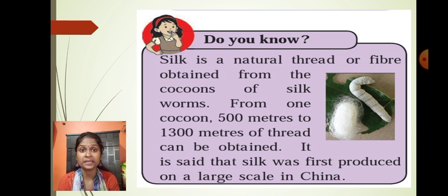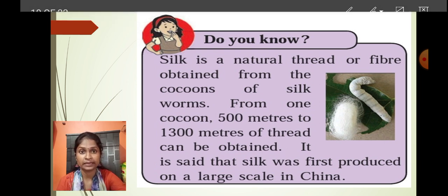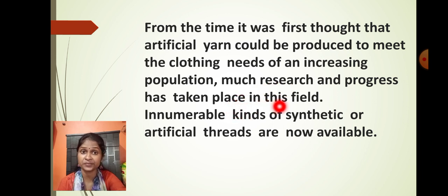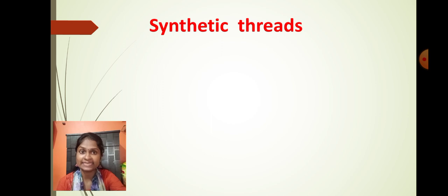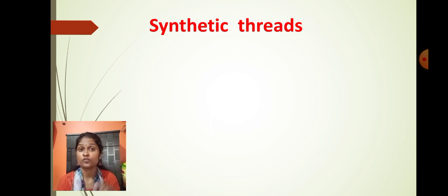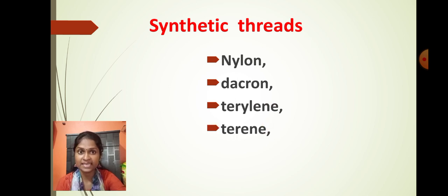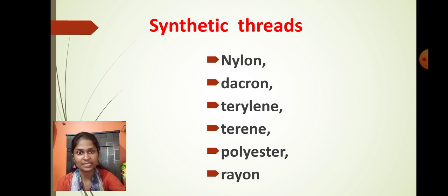As population is increasing, we want more and more cloth. So it was thought that artificial yarn would be produced to meet the clothing needs of an increasing population, and much research and progress has taken place in this field. Innumerable kinds of synthetic or artificial threads are now available. The synthetic and artificial fibers are: nylon, dacron, terylene, terrine, polyester, and rayon.